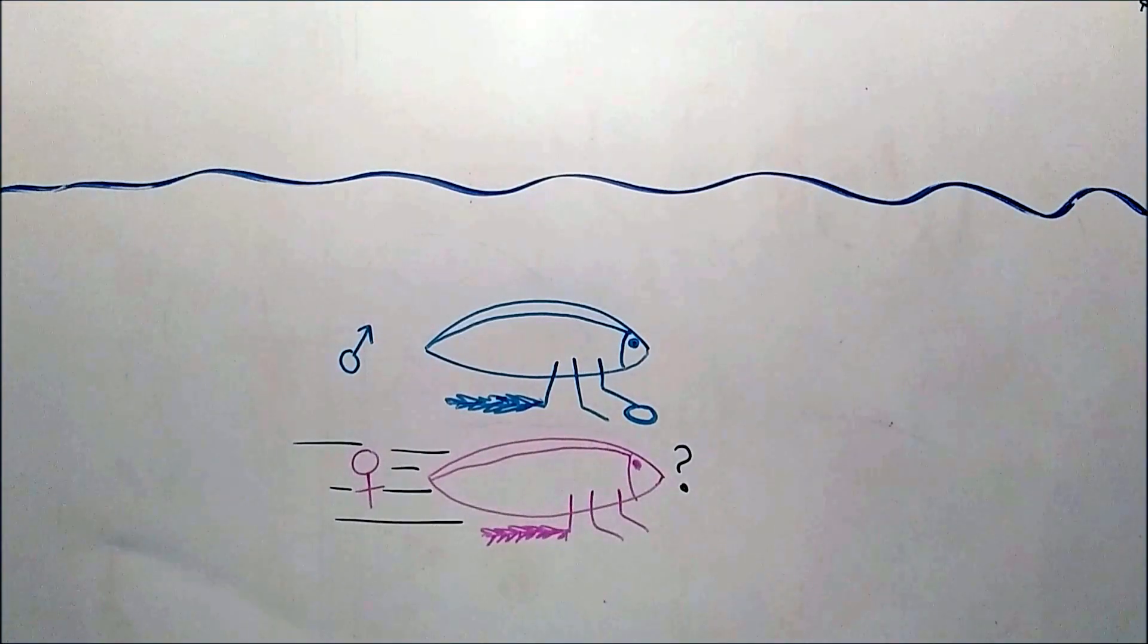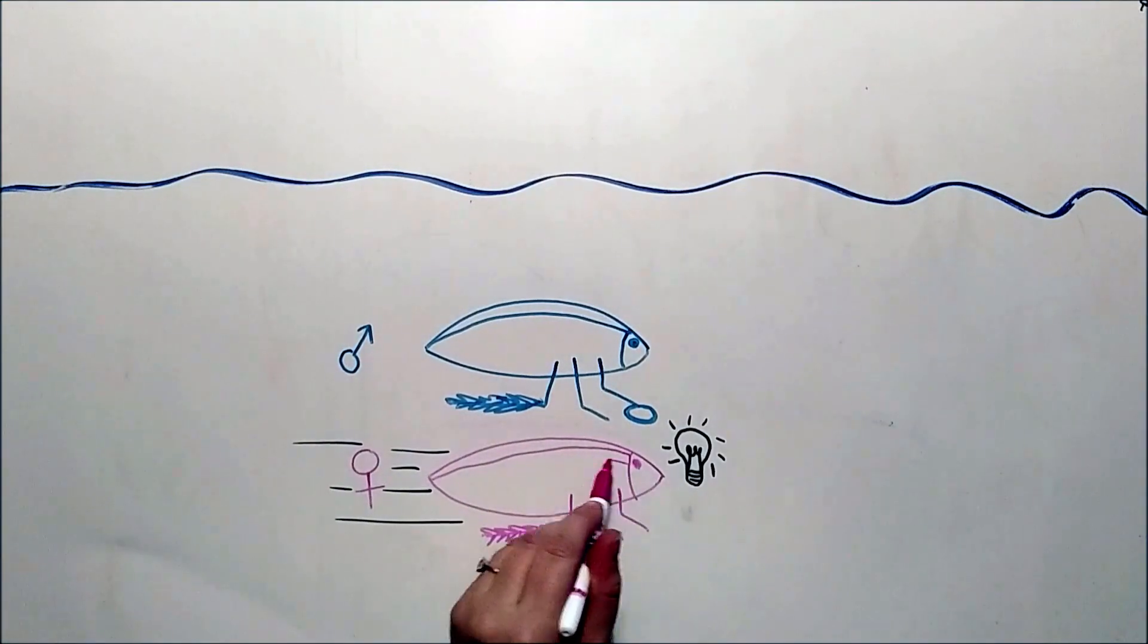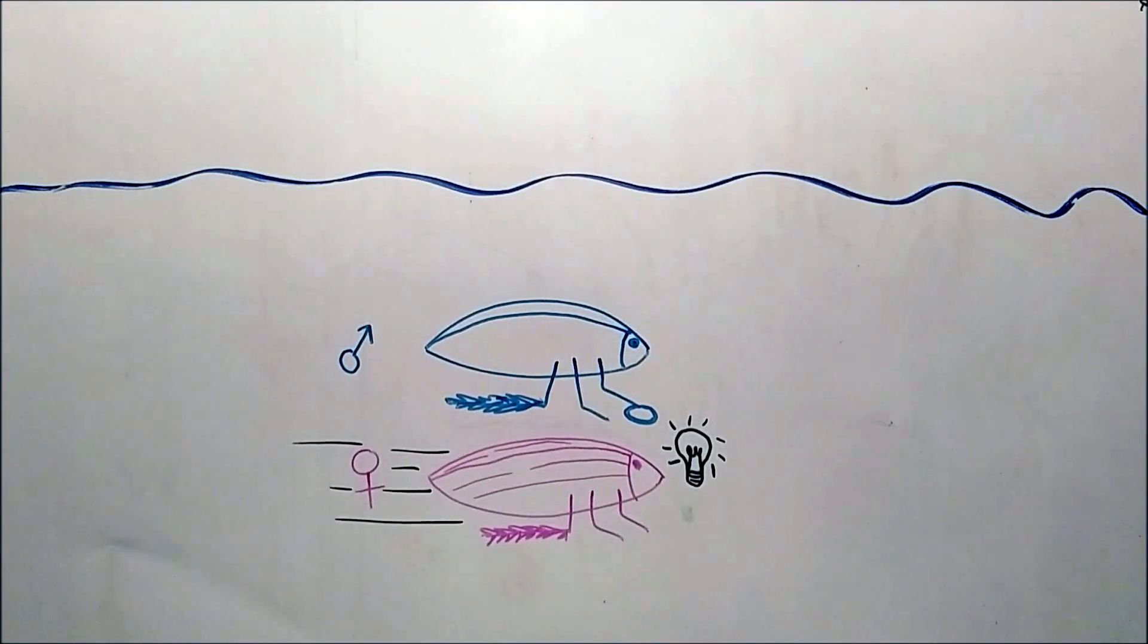How is she going to get out of this? Is there a way to make the male's grip less powerful? Grooves! Now the female has grooves on her back that will break the suction of the males.